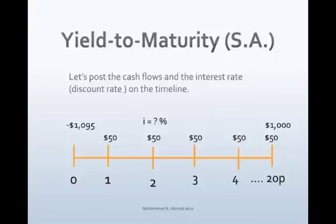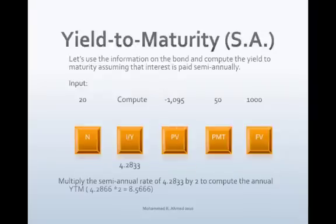The next step is to draw a timeline for the problem and map the cash flows onto it. The time period is 20 semi-annual periods. The investor pays $1,095 at period zero. The semi-annual coupon amount is $50 per period, and the par value of $1,000 is the future value received at the end of 20 semi-annual periods.